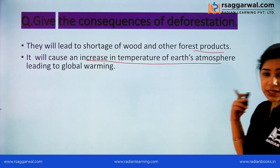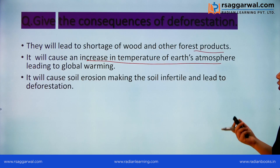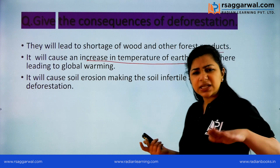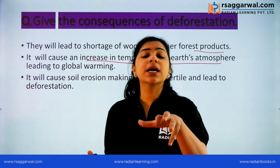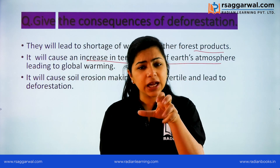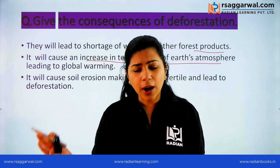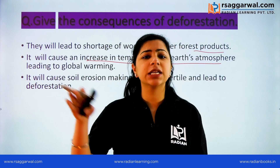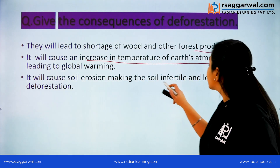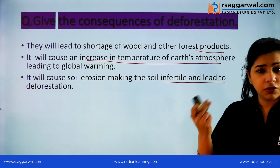Next consequence: deforestation will cause soil erosion, making the soil infertile. When trees are cut, there is nothing to hold the soil in place. The roots of trees bind the soil. Without them, the soil erodes — it gets washed into water. This causes erosion and makes the soil infertile because the top layer of soil, which contains humus, gets removed.